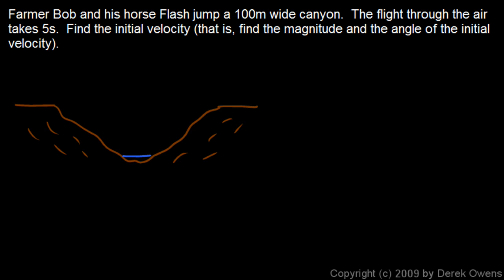In this problem, we're told that Farmer Bob and his horse, Flash, jump a 100 meter wide canyon, and the flight through the air takes five seconds. And we have to find the initial velocity, and we're told specifically to find the magnitude and the direction, or the angle. So we need to know how fast he's moving and in what direction that he had to jump in order to make this leap across this canyon that's 100 meters wide.